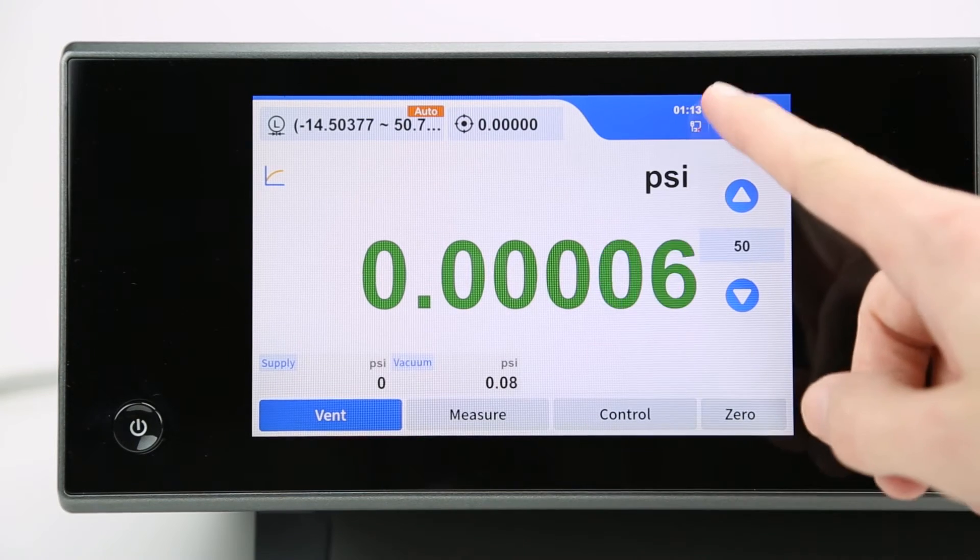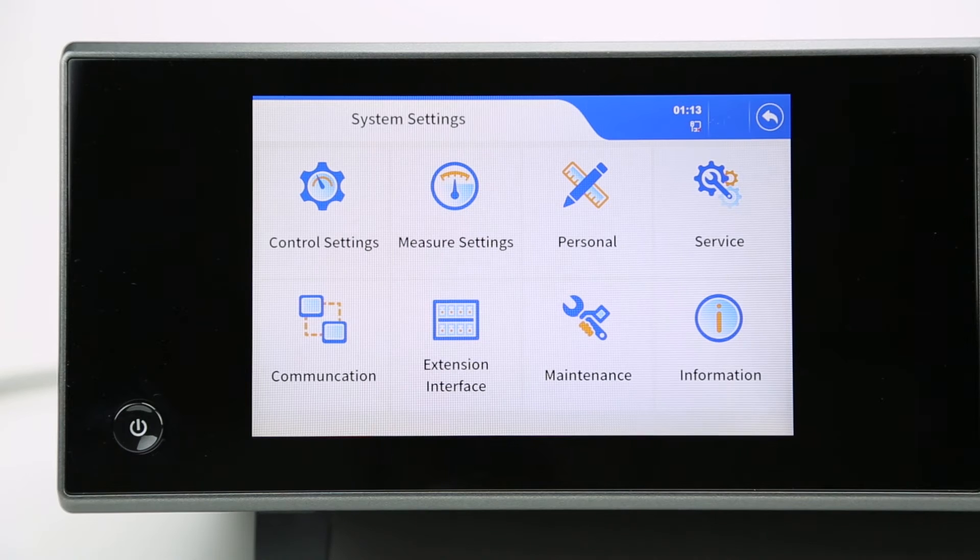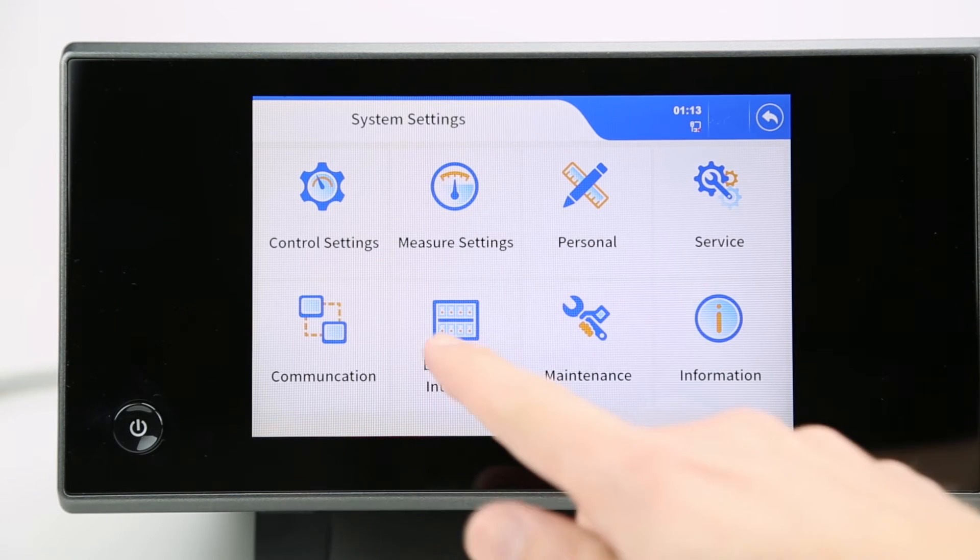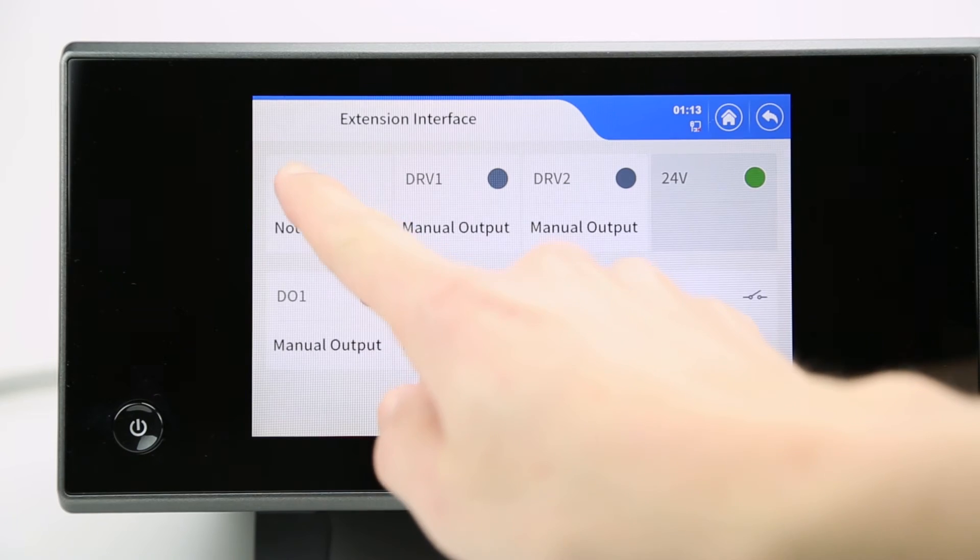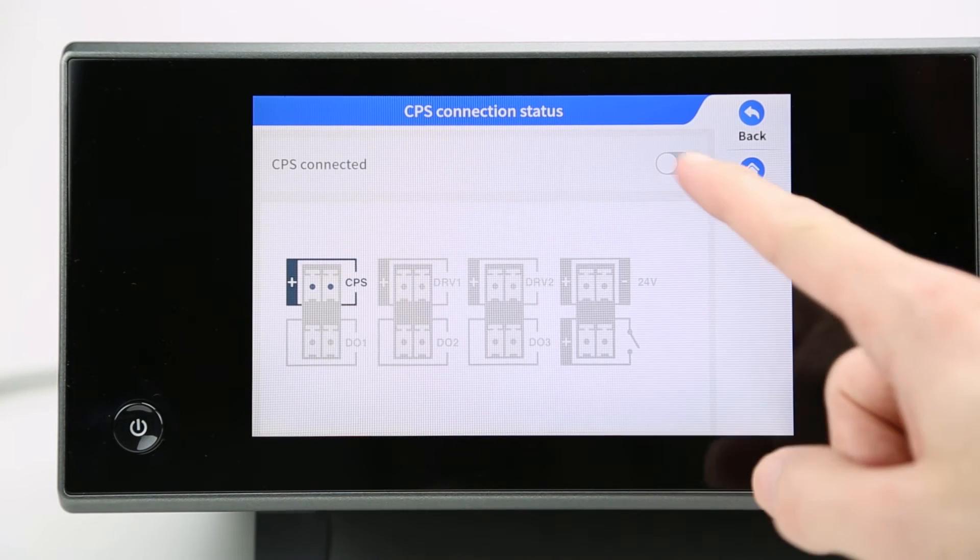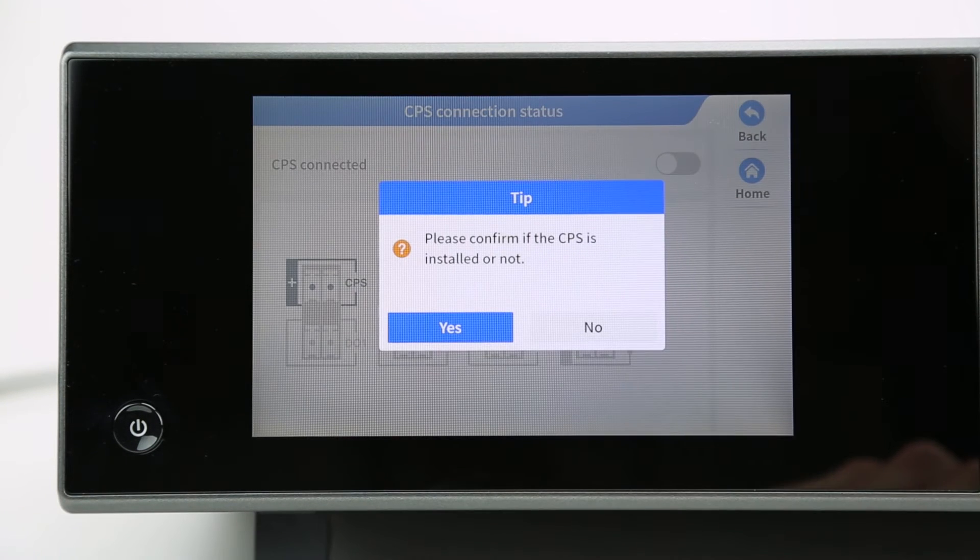To ensure the CPS is active, select the settings icon from the main screen of the controller, then select extension interface. From here, select the CPS option to toggle it on, where you'll be asked to confirm that the CPS is installed.